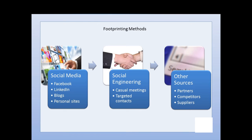Other sources of information may include partners, competitors, and suppliers. There are a wide variety of ways to get this information by examining documents and websites from those sources or using social engineering with them. The whole point is to get information about your target — whether that's the organization, the person, or network infrastructure — and we'll go through a lot of these methods in depth as we go through this part of the course.